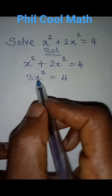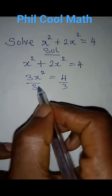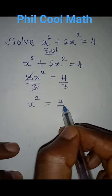What can we do? We can divide both sides by 3. This will cancel this, and then x squared will be equal to 4 over 3.